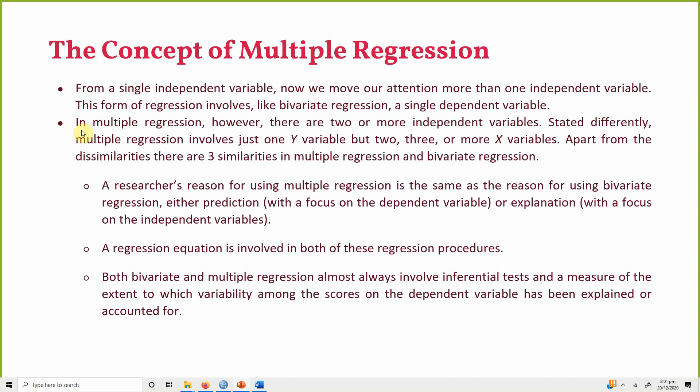Moving on — what is multiple regression? Bivariate regression means one independent and one dependent variable. Multiple regression means there are two, three, or four independent variables and one dependent variable.